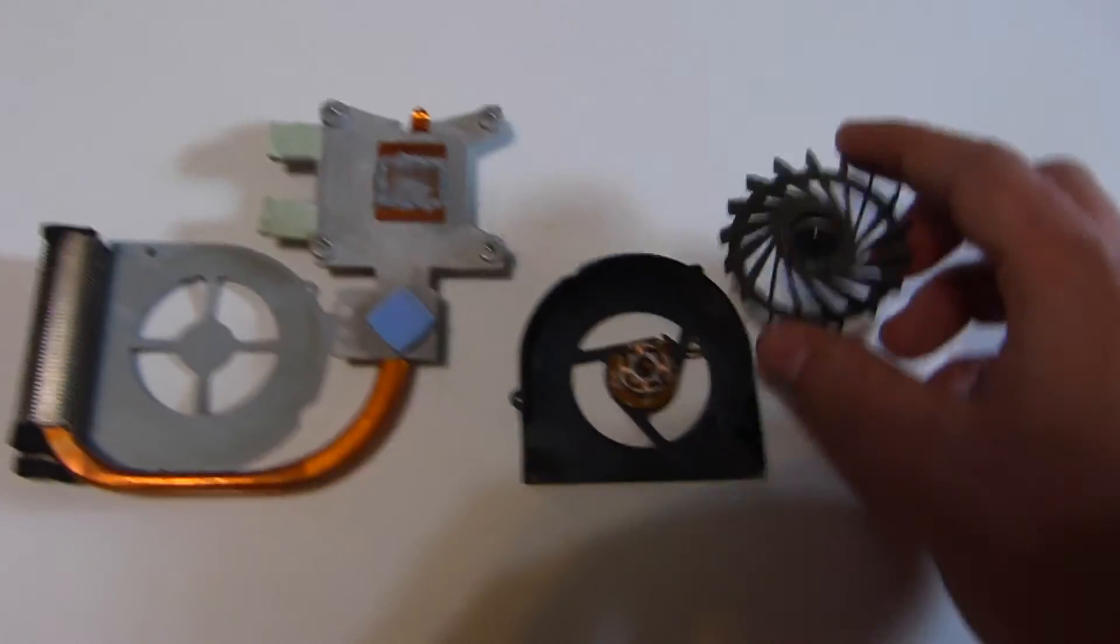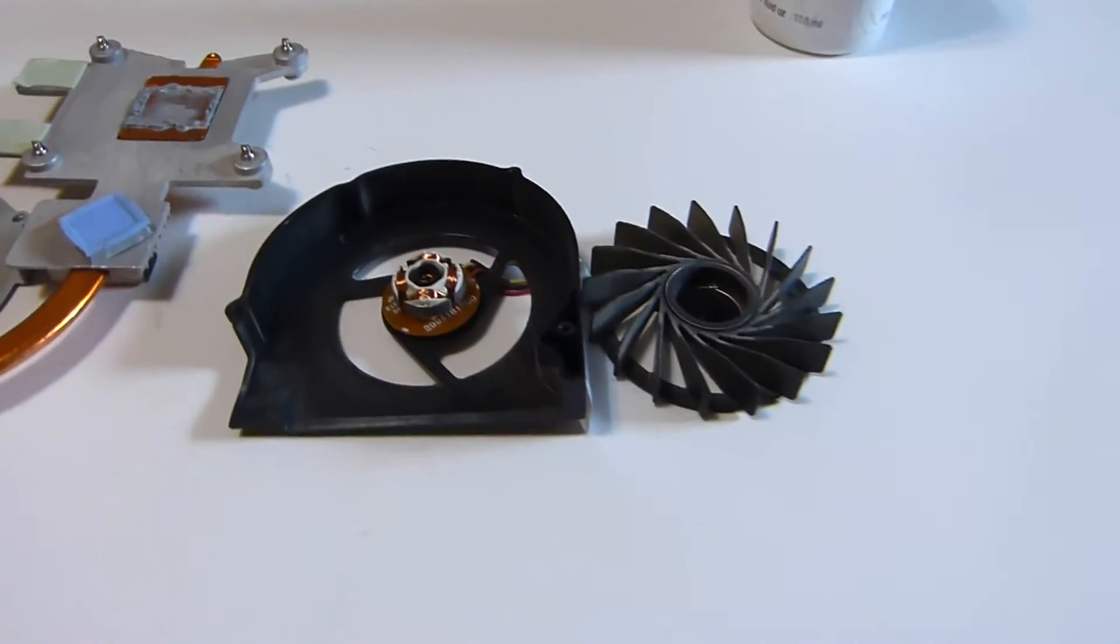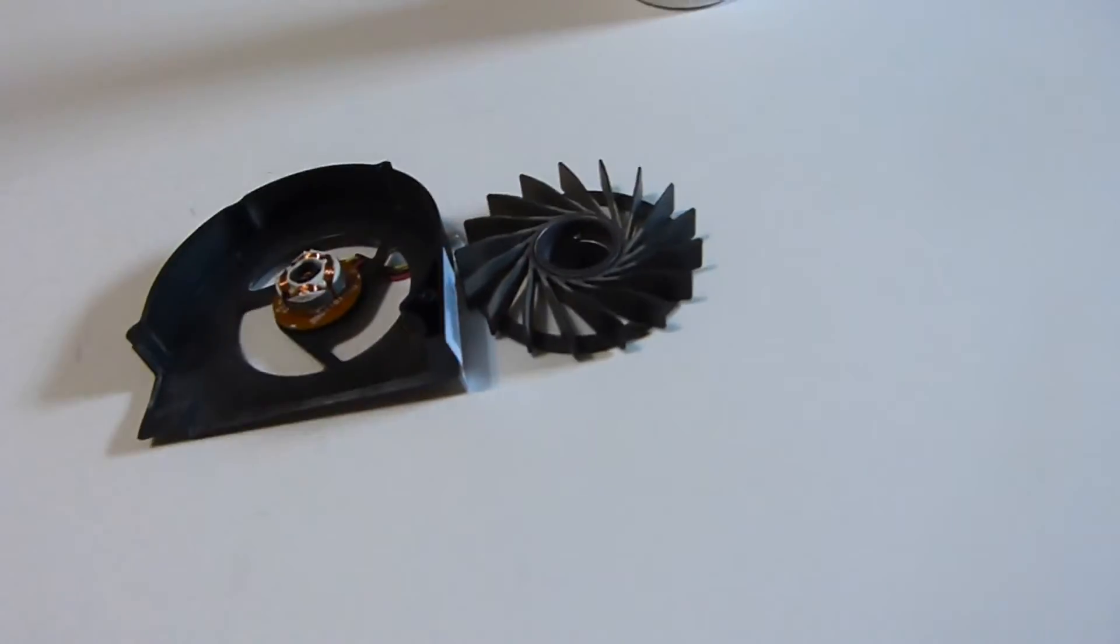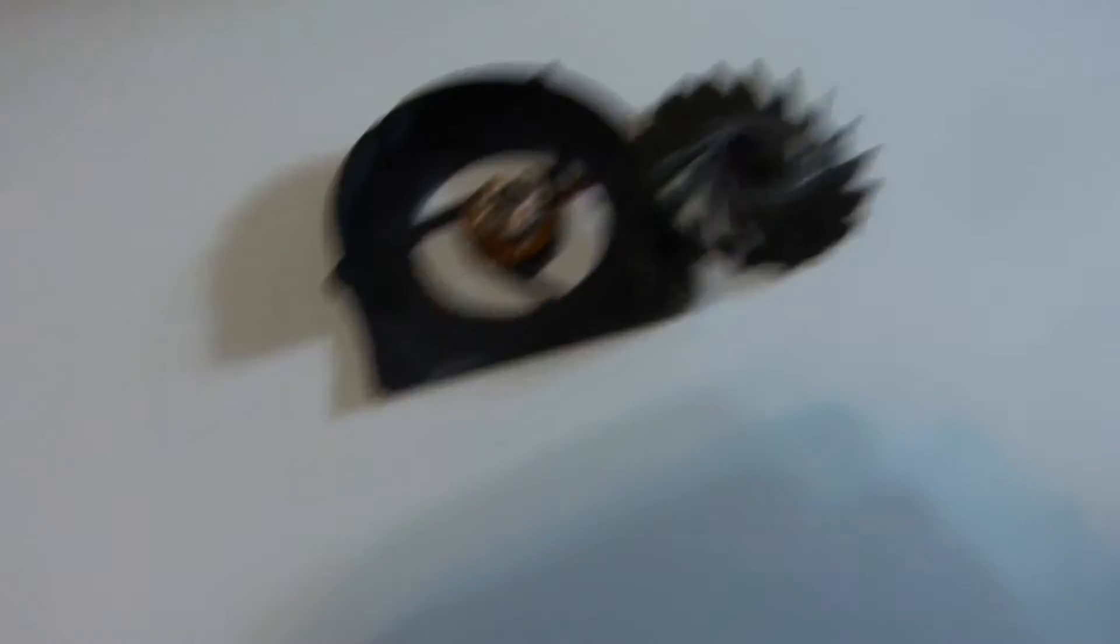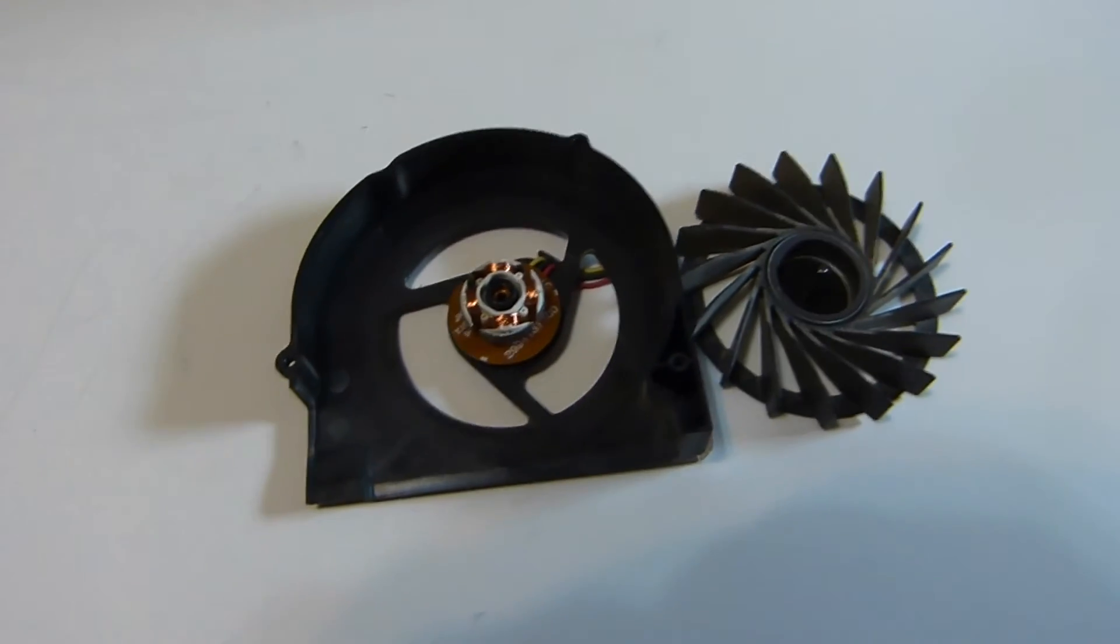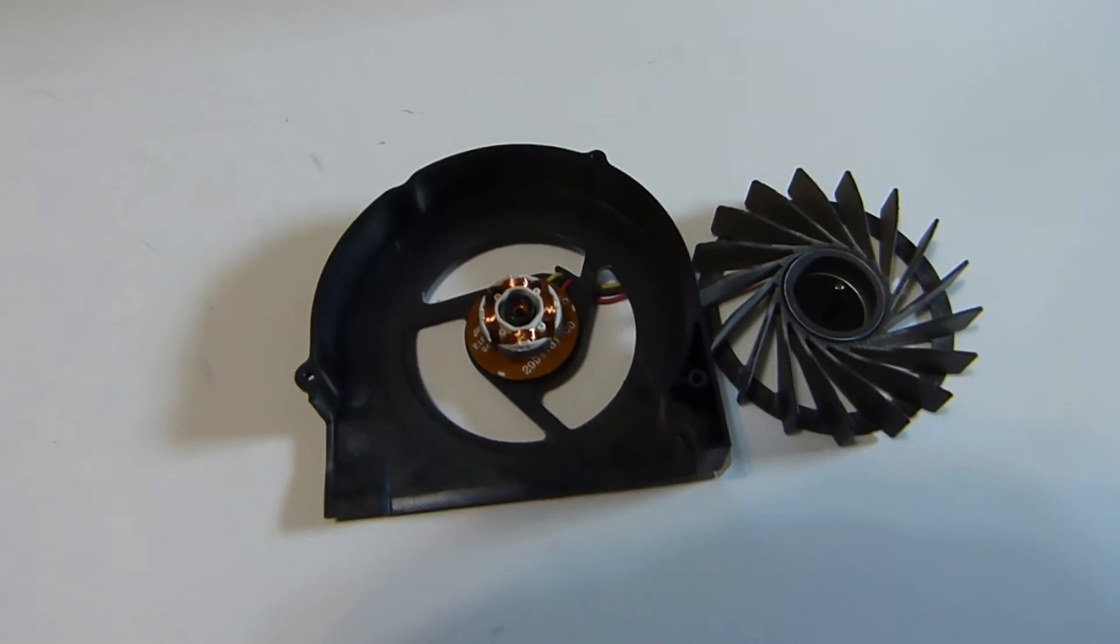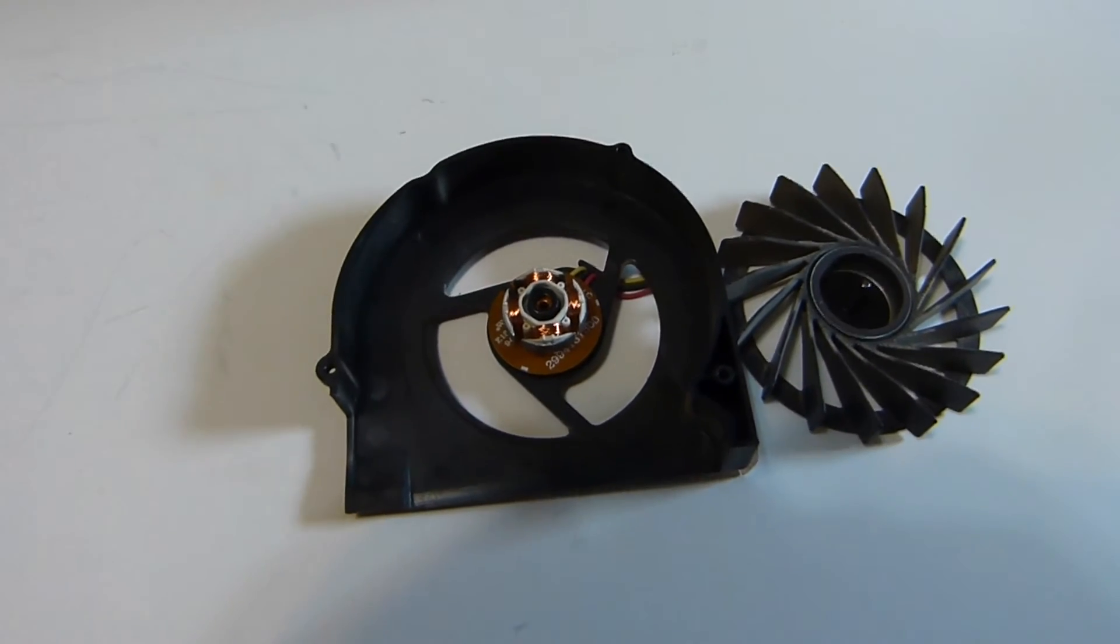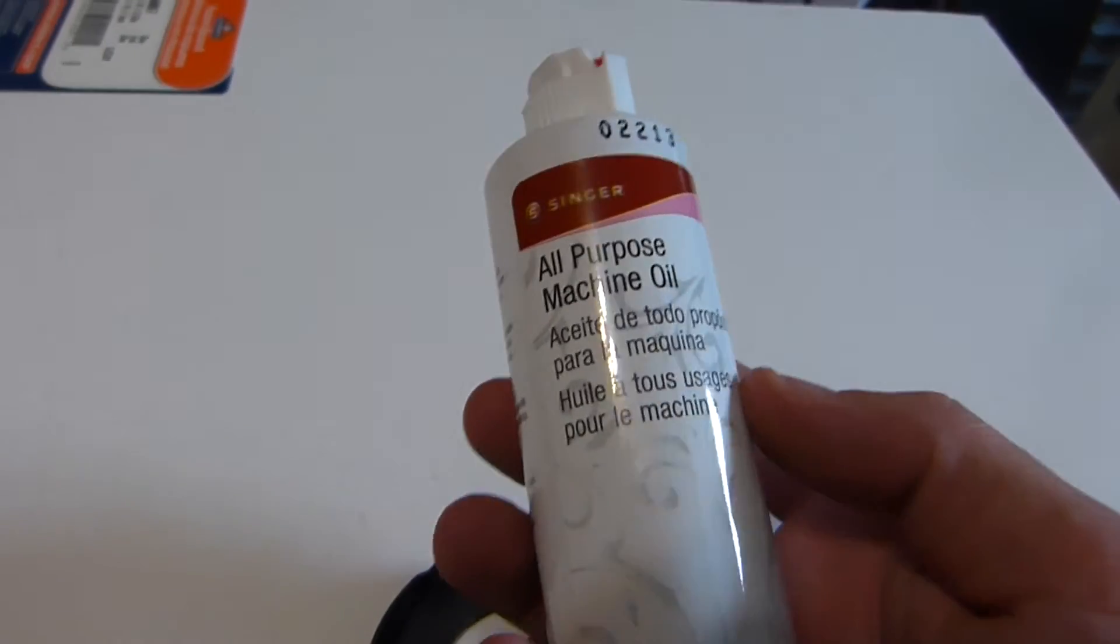Now, what do you use to re-lubricate this? You do not use WD-40 ever on parts like this. These are high-velocity bearing systems, and WD-40 may seem, oh, it's real slick, but it will eventually seize up.